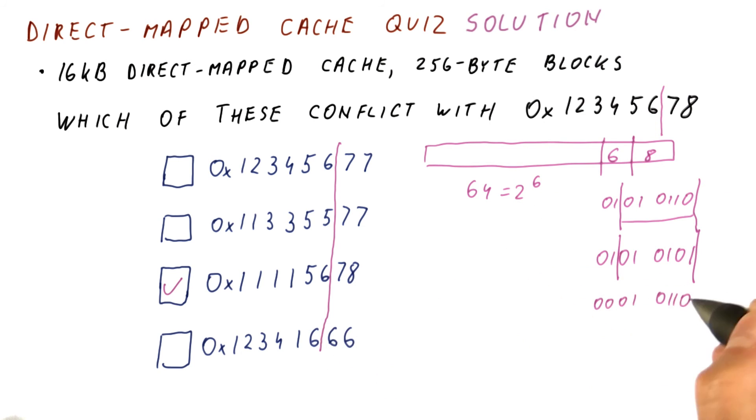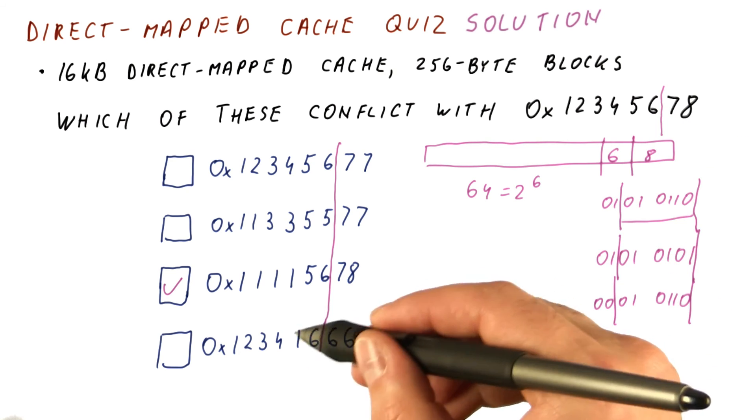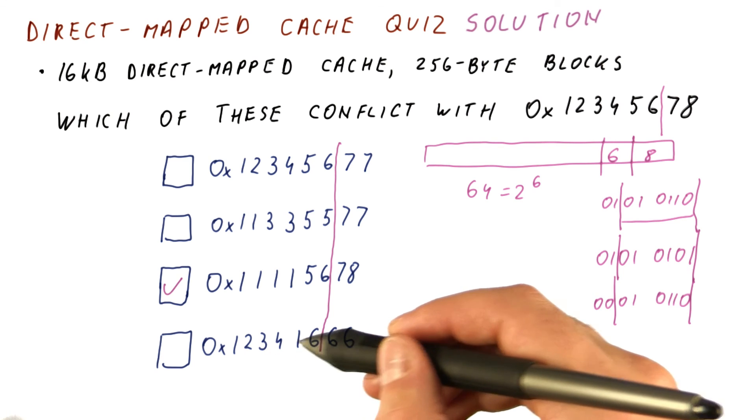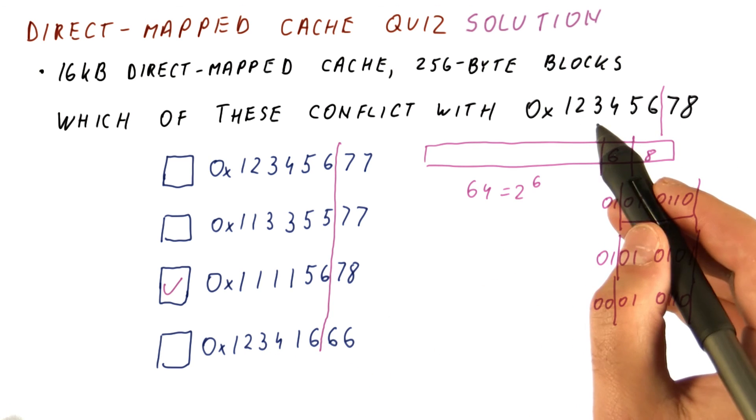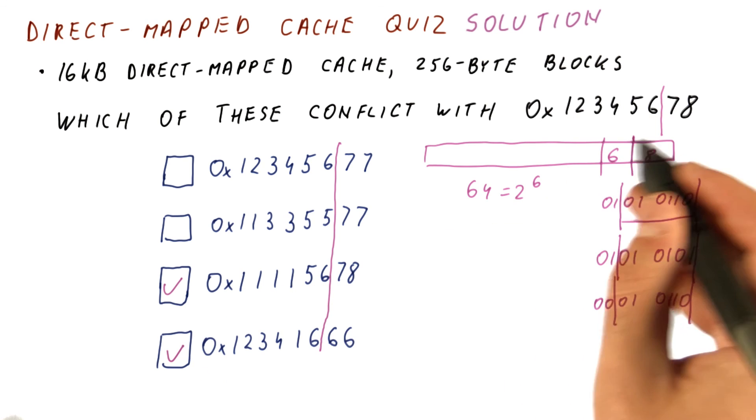Finally, one, six looks like this. These are the bits that we're interested in, and they do indeed match the ones of this block. So this goes to the same place in the cache as this, and it's a different block. Because this is one, two, three, four, one, six. And this is one, two, three, four, five, six. So this will also conflict with our block.